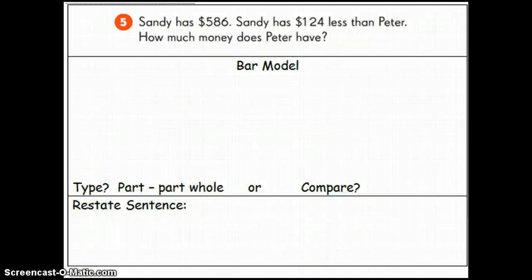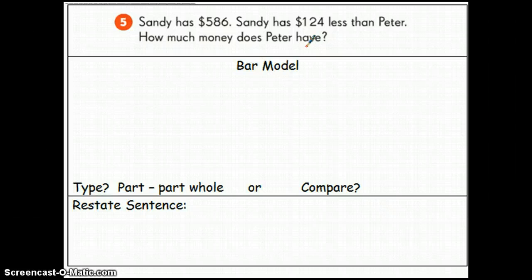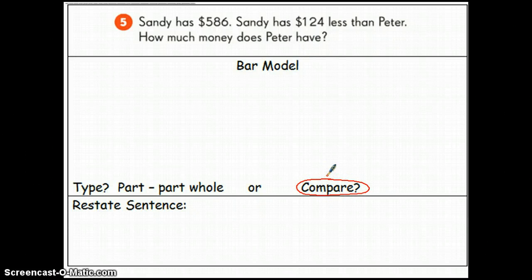Here's another example of an addition bar model. This word problem says, Sandy has $586. Sandy has $124 less than Peter. How much money does Peter have? First thing I'm going to ask myself, is this a part-part-whole or a compare bar model? And it is actually a compare model. So, this bar model is going to look a little different than the part-part-whole explained previously.